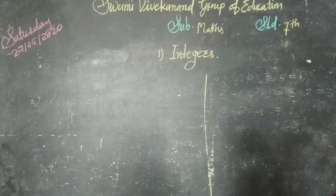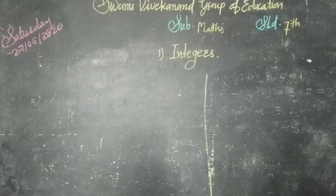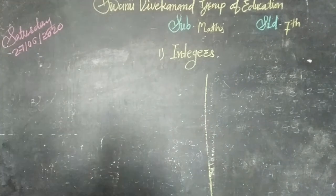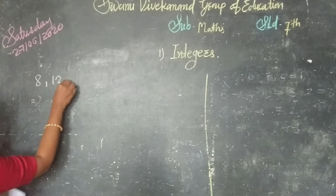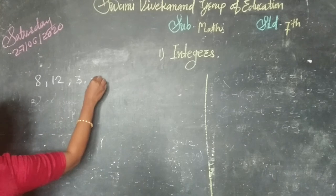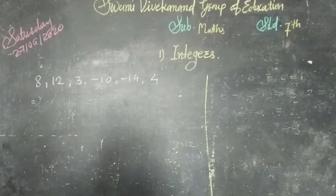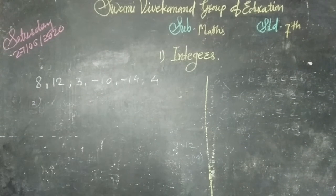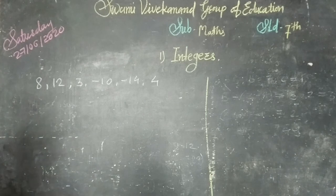Now, before starting addition and subtraction of an integer, there is one question in your exercise about arranging the given numbers from least to greatest. The example numbers are: 8, 12, 3, minus 10, minus 14, and 4. The question is to arrange these integers from least to greatest, which means we have to arrange them in ascending order.